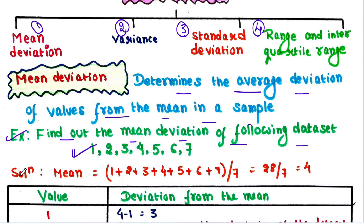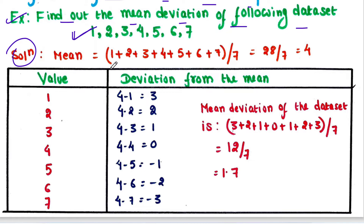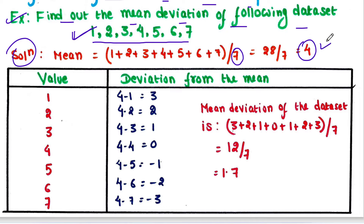From this data set, first we will find the mean. We know how to find the mean — we will add all these values and divide the total by the total number of values. We have 1, 2, 3, 4, 5, 6, 7 — a total of 7 values. So the mean is 4.